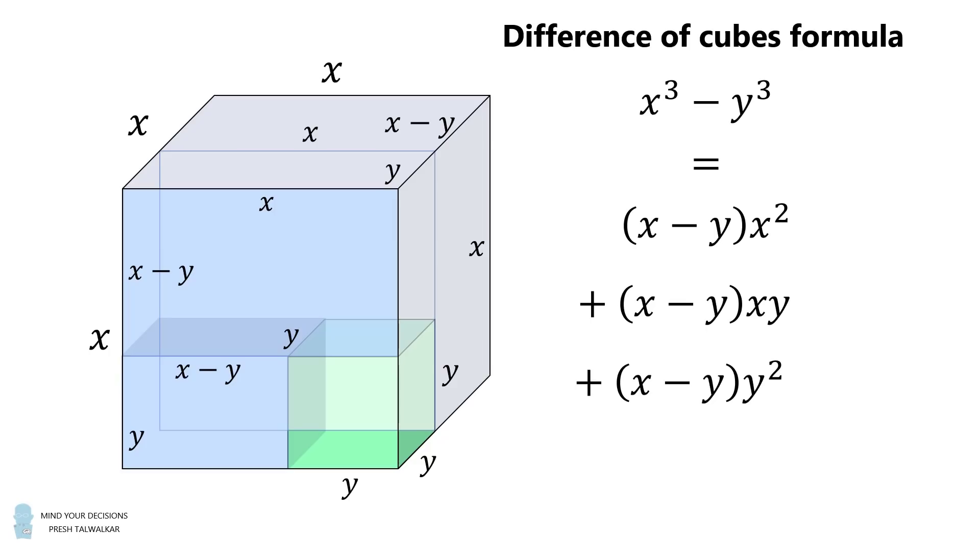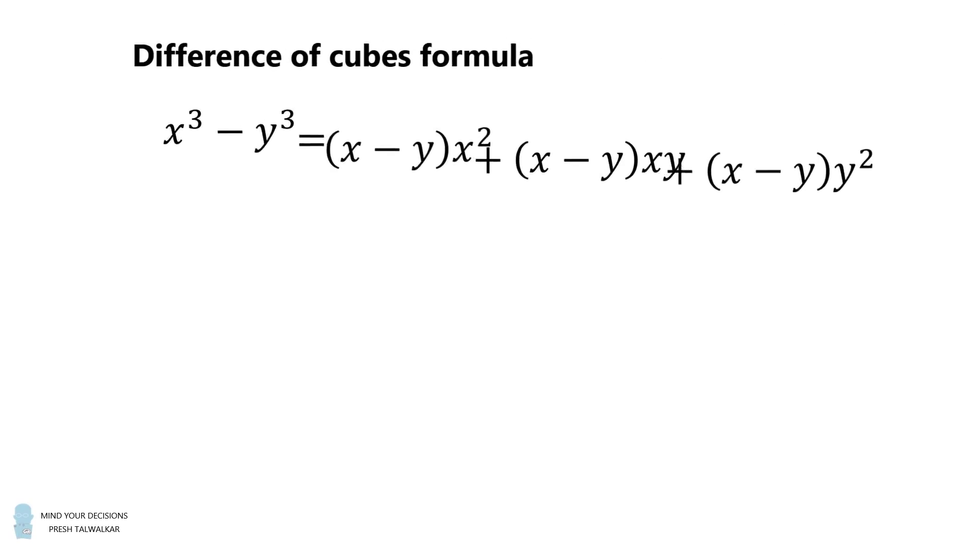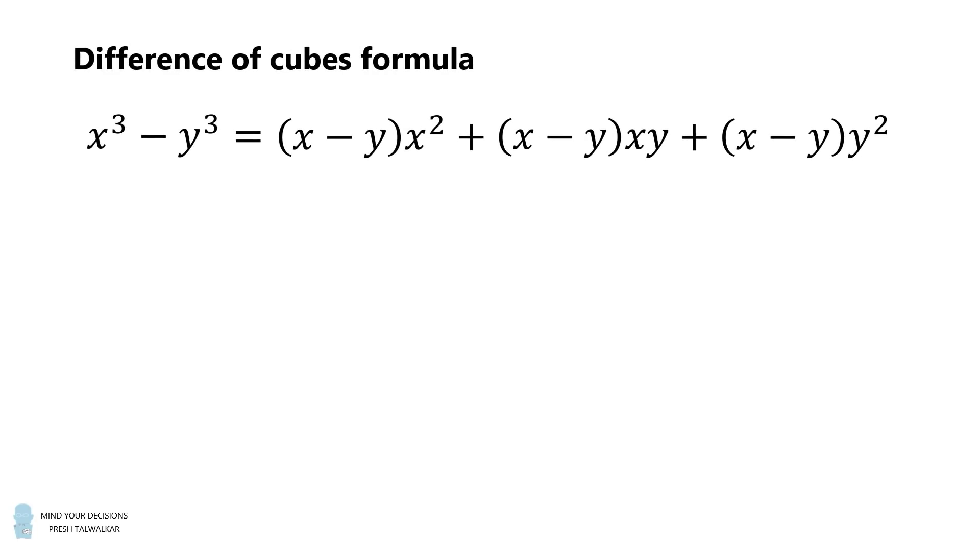So we have two ways to represent the volume that remains when we take the large cube minus the small cube. Thus, these two volumes are equal. We now look at this algebraic formula. Let's simplify it. The three terms on the right-hand side each have a factor of x minus y. So we can factor it out. We thus simplify this formula and we get x cubed minus y cubed is equal to the factor x minus y multiplied by the factor x squared plus xy plus y squared.